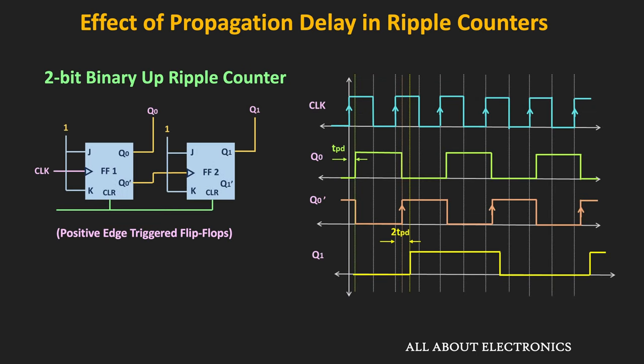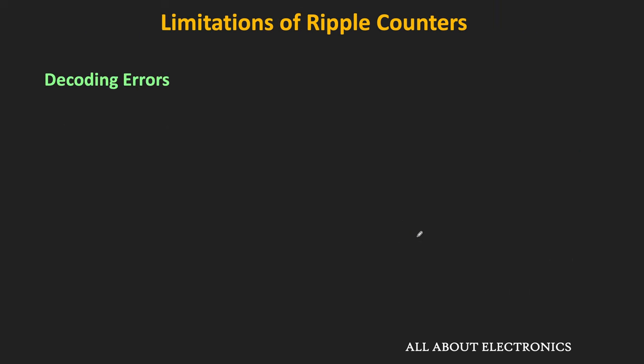In the previous video, we saw the limitations of the ripple counter. In the ripple counter, since the output of one flip-flop is connected to the clock input of the next stage, the propagation delay of each flip-flop gets accumulated. As the number of stages increases, this issue becomes more prominent, and we might see decoding errors or skipping of the count. Due to these limitations, asynchronous or ripple counters are not preferred for high-speed applications.